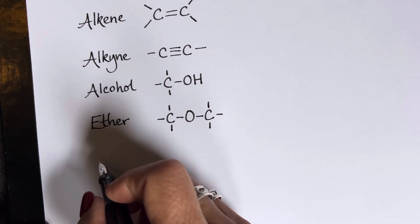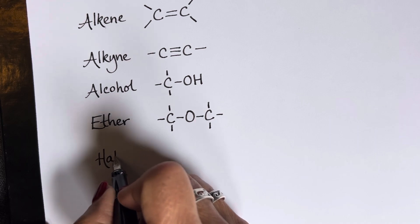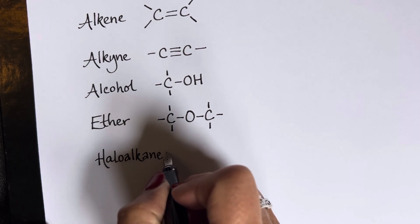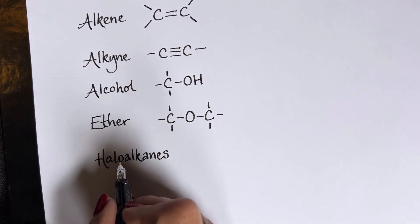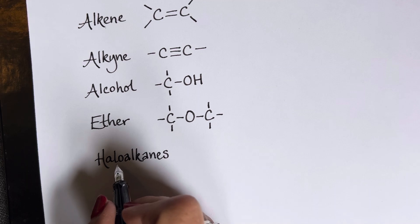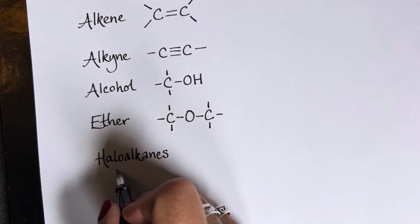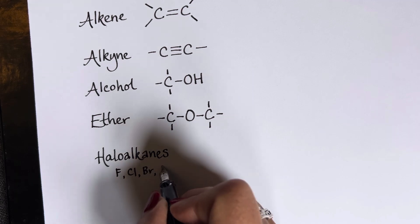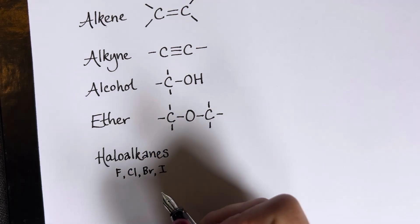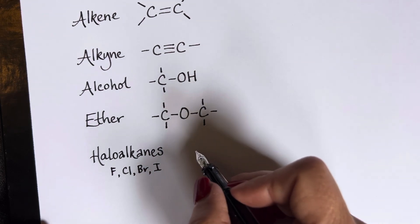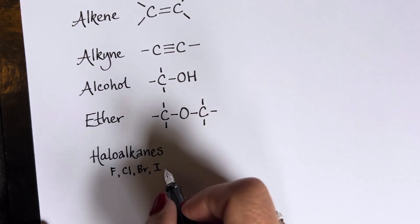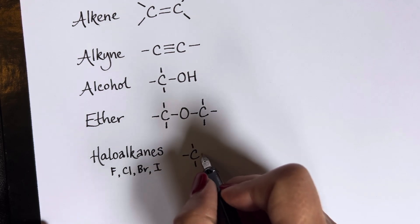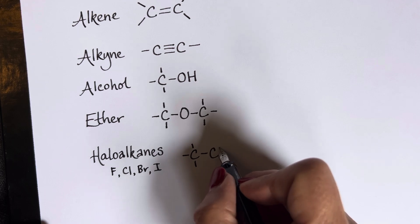Next up, let's talk about haloalkanes. So halo, this implies it is a halide. So it could be fluorine, chlorine, bromine, or iodine. So I'm gonna do an example here where we'll have carbon bonded to a chlorine.